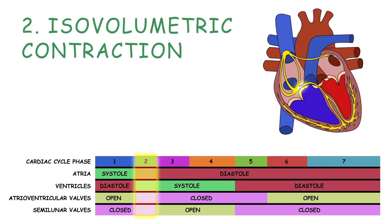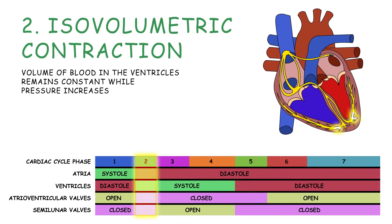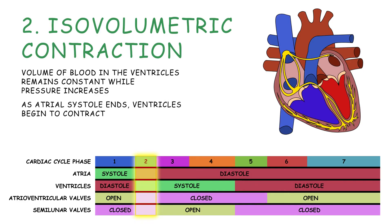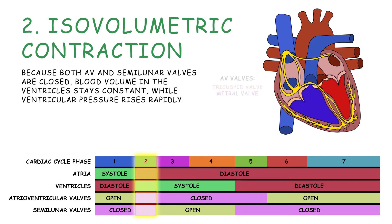Next is isovolumetric contraction, known as such because the volume of blood in the ventricles remains constant while pressure increases. As atrial systole ends, the ventricles begin to contract. Because both the atrioventricular and semilunar valves are closed, blood volume in the ventricles stays constant while ventricular pressure rises rapidly.